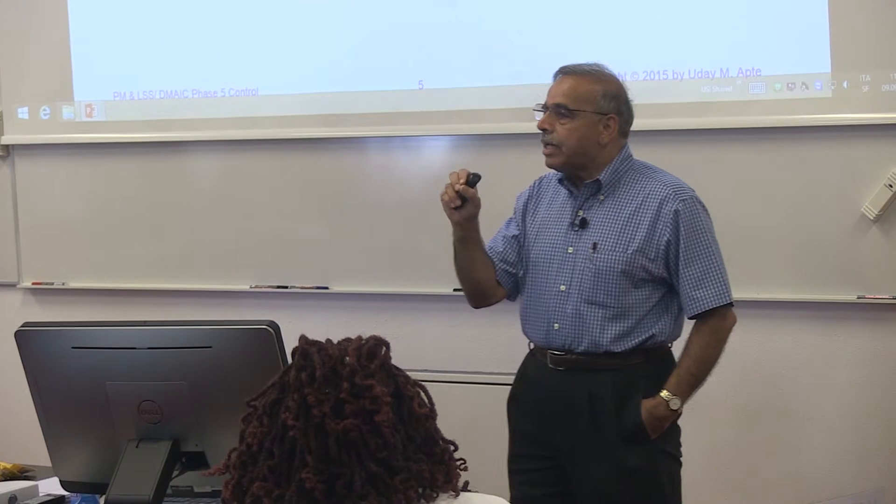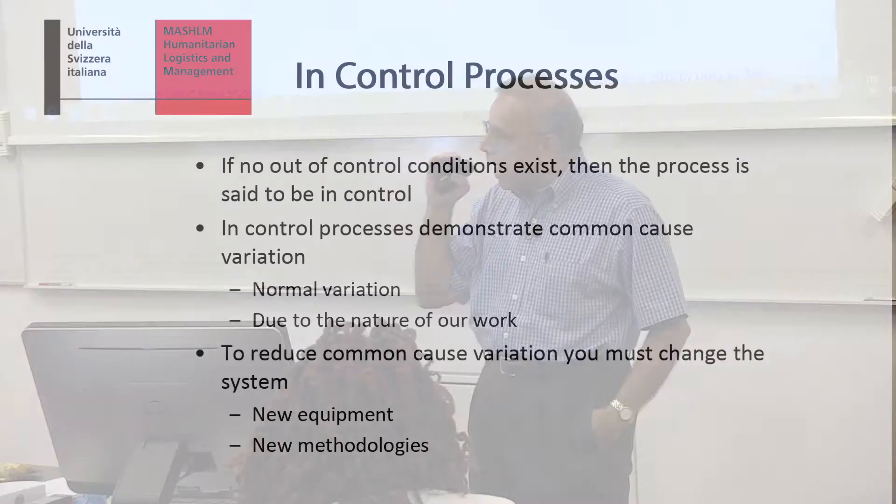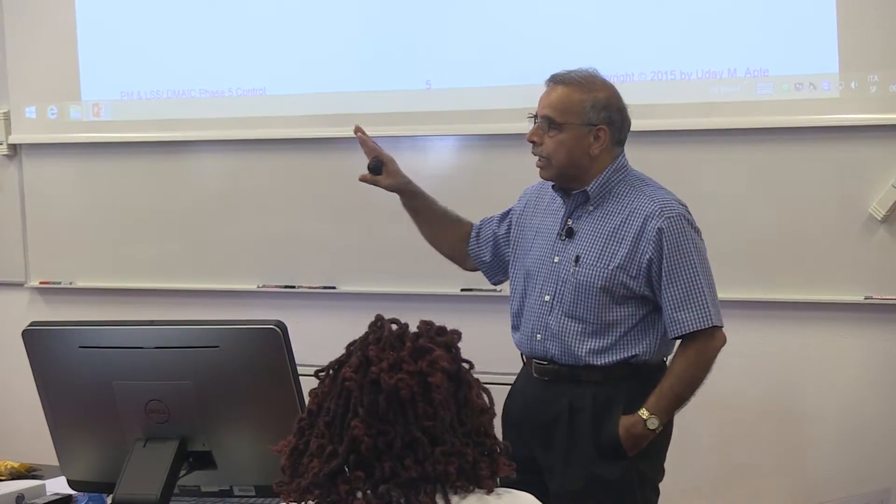The other condition is in control — the observation is within the control limits. There is still going to be variation; it is not as if your performance is exactly the same all the time. But that variation is inherent, natural, within a small amount, and your observations remain within the control chart boundaries.